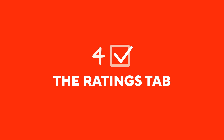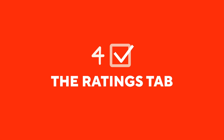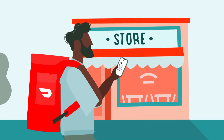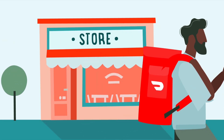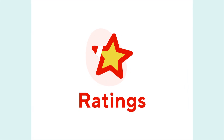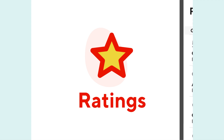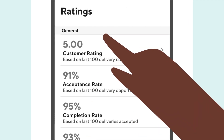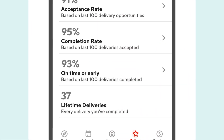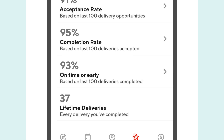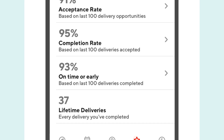Chapter 4: The Ratings tab. As a Dasher, you'll receive ratings that help you track your performance on the platform. Ratings determine if you're eligible to dash and can also help you qualify for special programs and incentives. By tapping the Ratings button, you're provided details about your dashing history. This includes customer ratings, acceptance and completion rates, and completed lifetime deliveries or tasks.